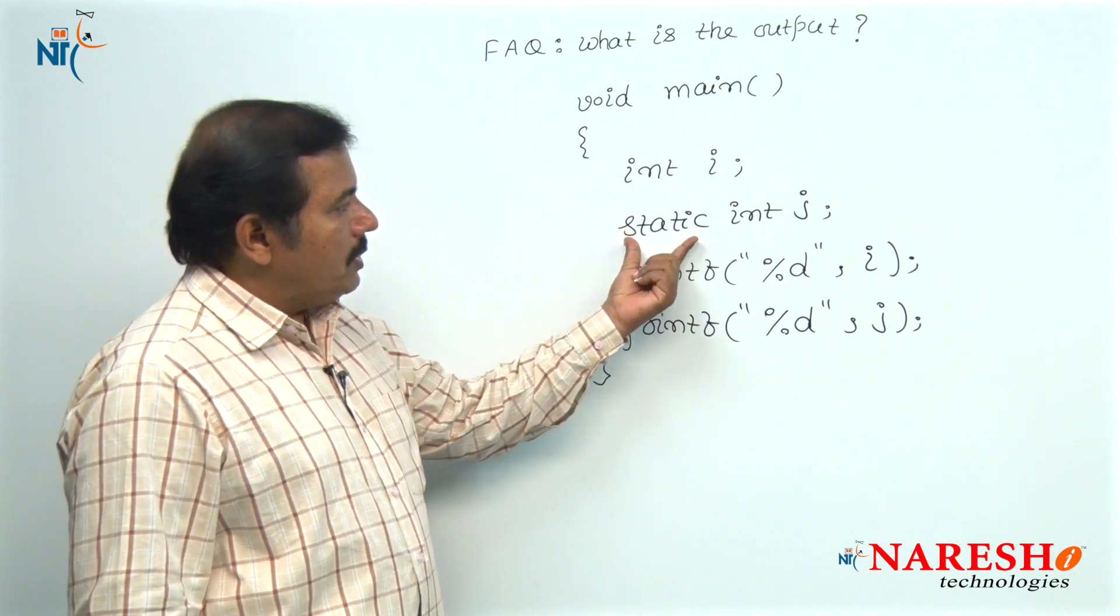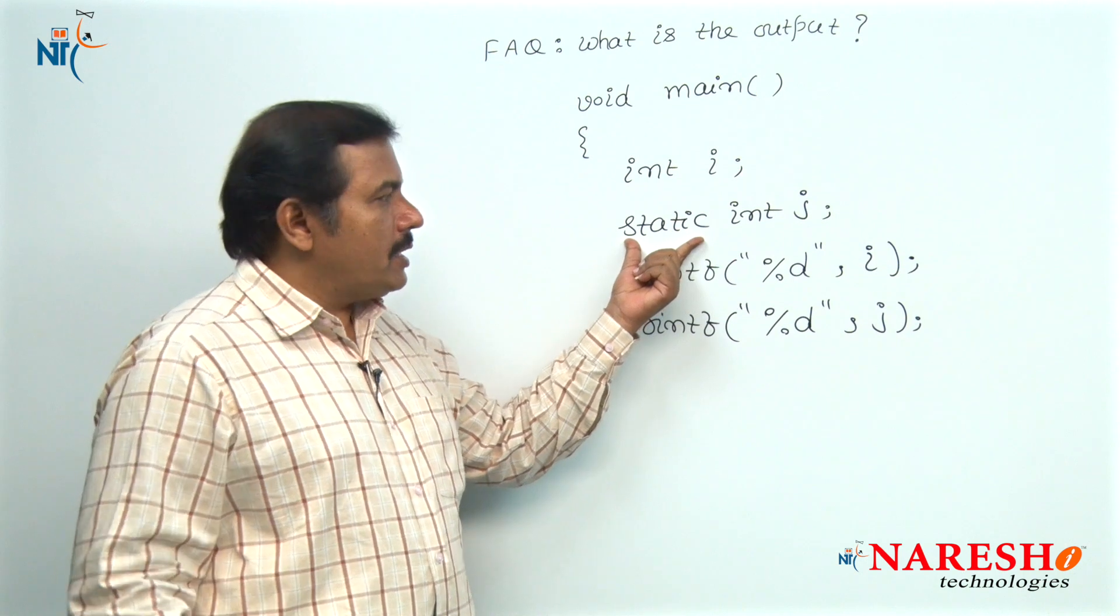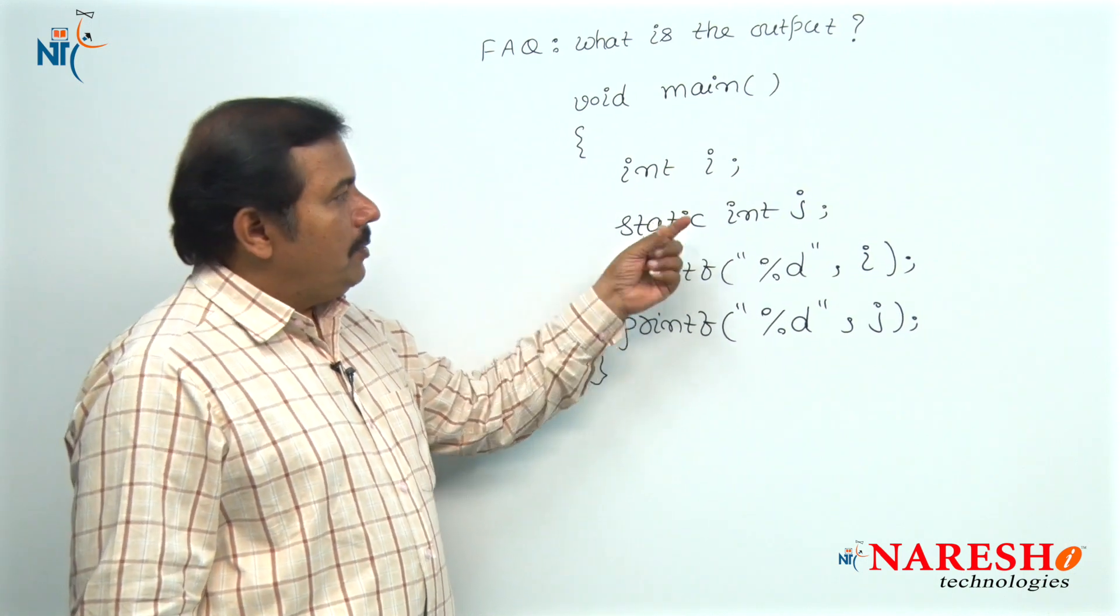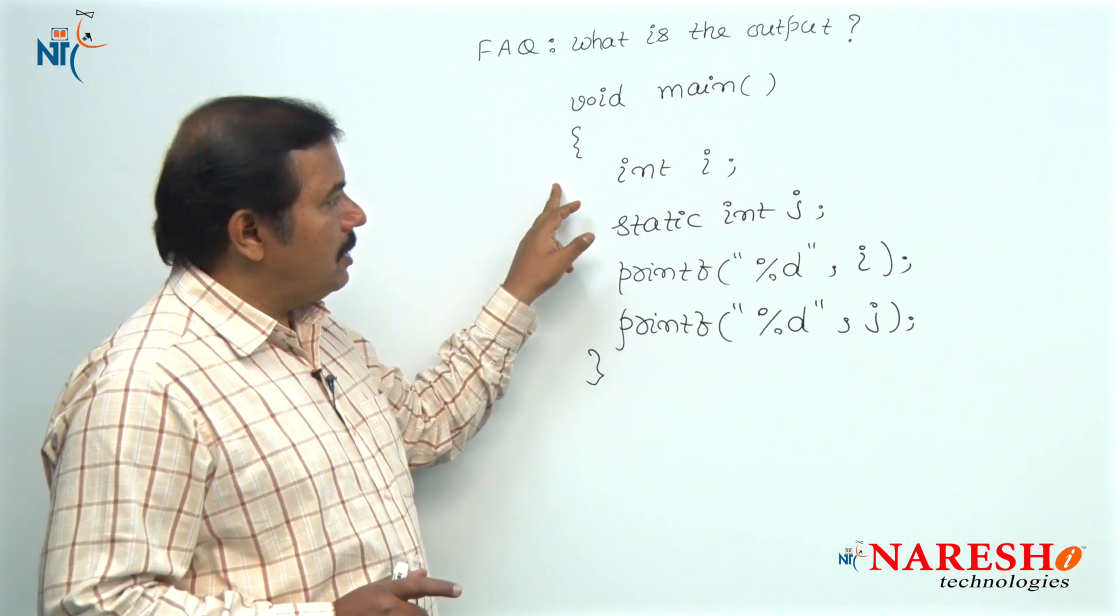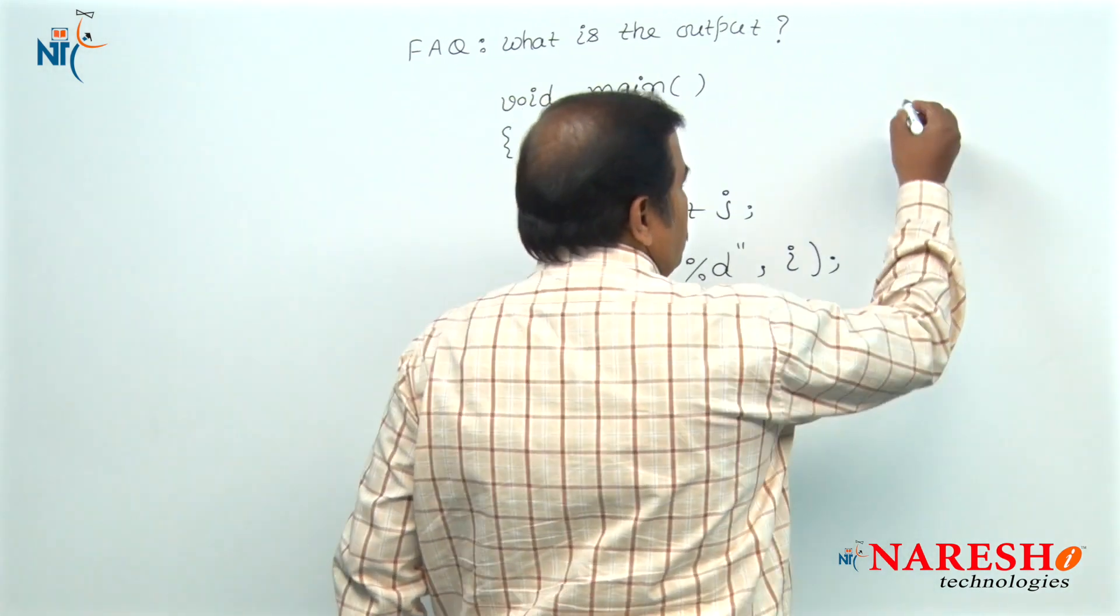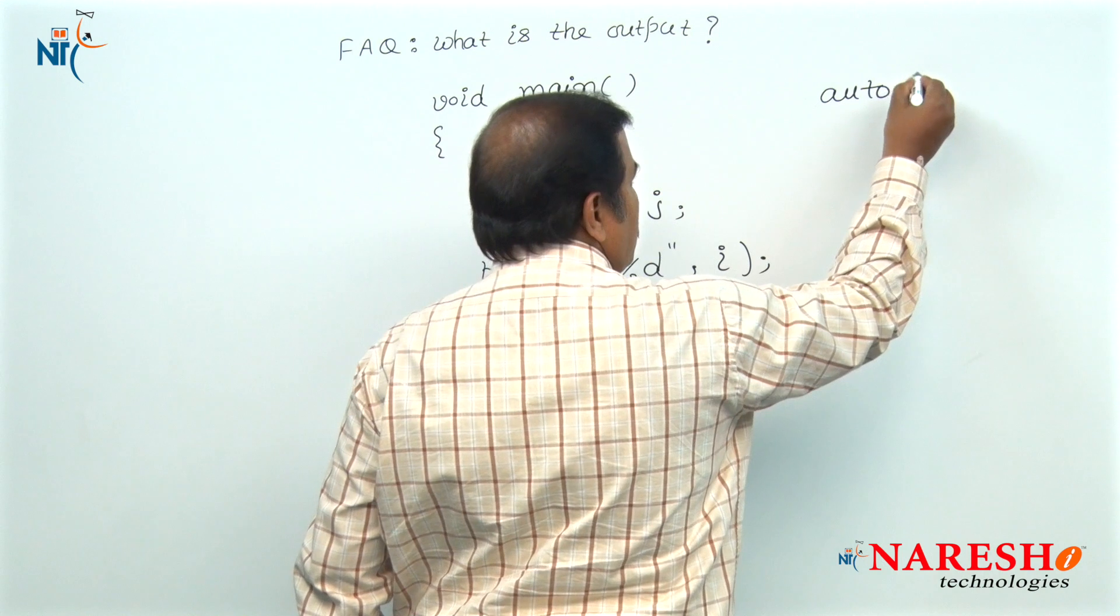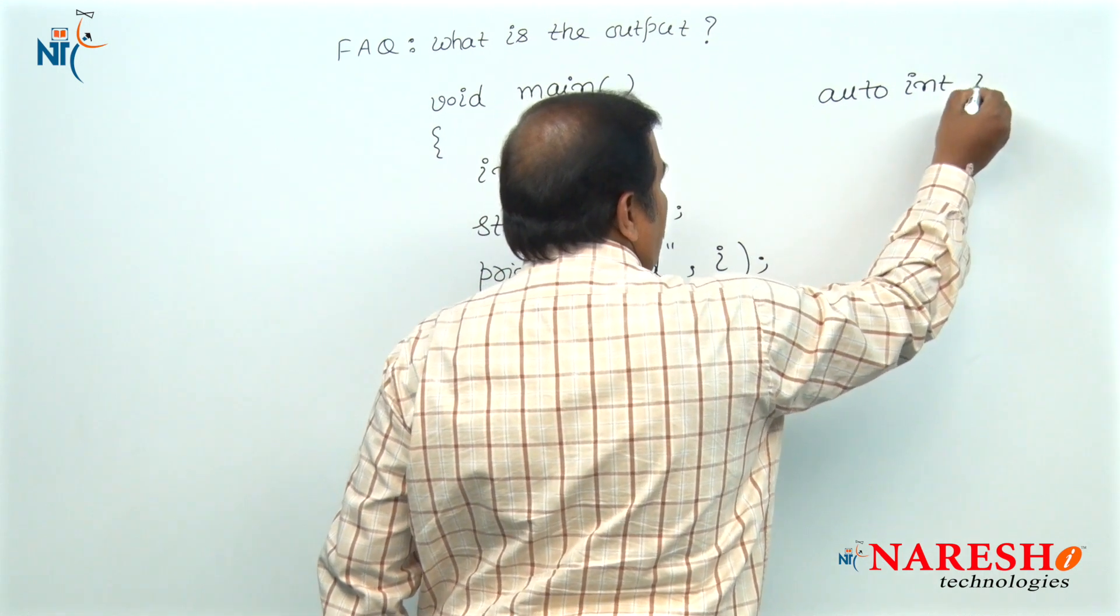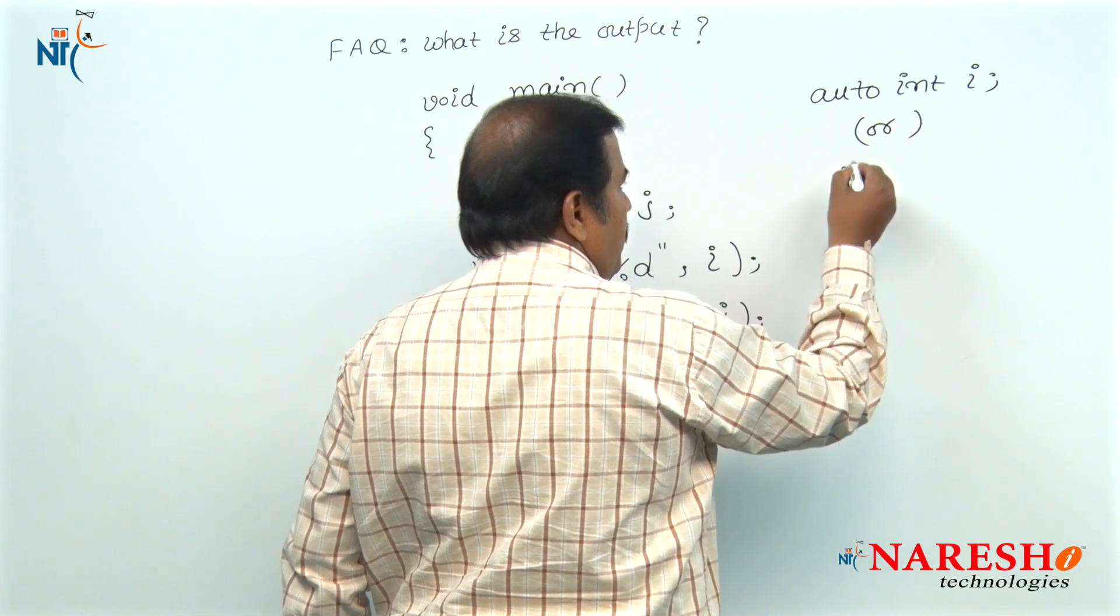In this code, the keyword static is known as a storage class specifier. By default, the storage class of any variable is automatic. Automatic variables can be declared explicitly using the keyword auto, or you may simply declare the variable like this.